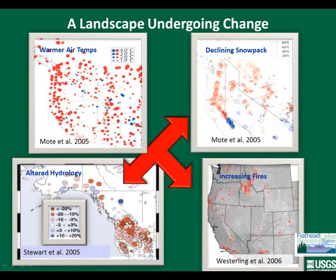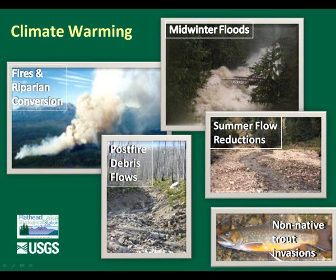Despite being recognized as a range-wide and regional stronghold for these species, habitat degradation and invasive species pose a serious risk, and our research has been applied to deal with these management issues to better manage our native species for future generations. One major factor likely to compound these existing stressors of habitat loss and invasive species is climate change. This landscape is undergoing tremendous change right now — warmer air temperatures monitored throughout the western U.S. have resulted in a declining snowpack, increasing fire regime in many of these basins, as well as an altered hydrologic regime.